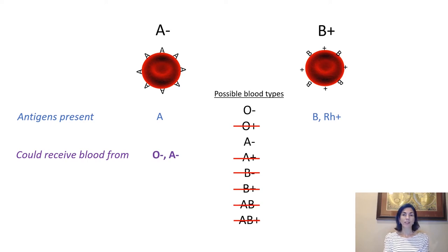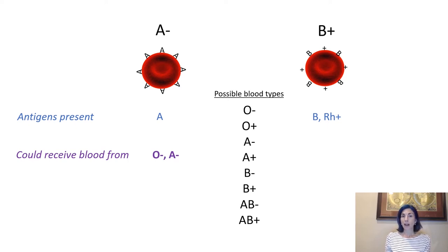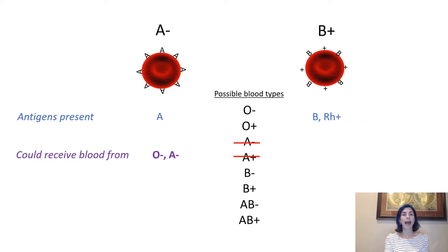Applying the same strategy to B positive blood: a B positive person makes both B and RH positive antigens, so the only antigen not on their list is A. They can accept any blood that doesn't contain A: O negative, O positive, B negative, and B positive are all acceptable. However, A negative, A positive, AB negative, and AB positive cannot be accepted because those blood types all contain the A antigen.